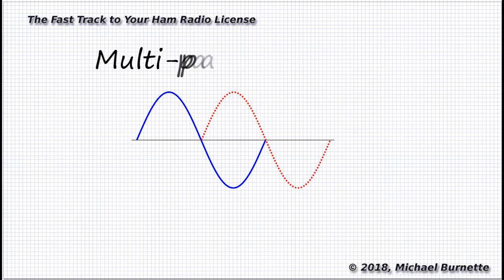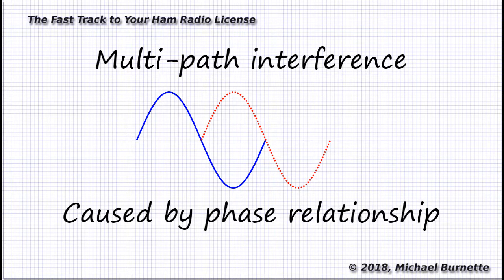And that's multipath interference. And it can happen whenever we receive a signal that's taken more than one path, hence the name, multipath, to our radio, and that second signal is reasonably close in strength to the first signal.